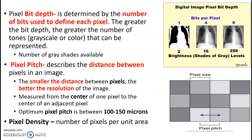Pixel bit depth is the number of bits used to define each pixel. The greater the bit depth, the greater the number of tones that can be represented. Pixel pitch describes the distance between pixels on the image, measured from the center of one pixel to the center of an adjacent pixel — the smaller the distance, the better your resolution. Pixel density is the number of pixels per unit area.